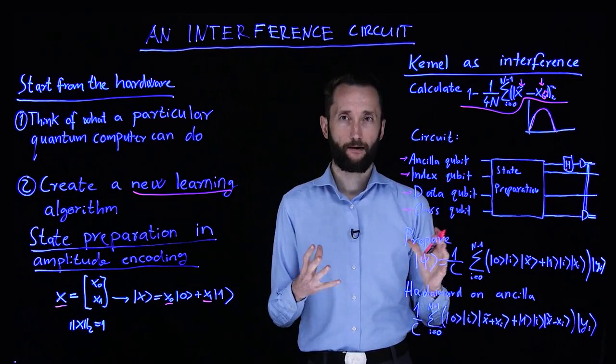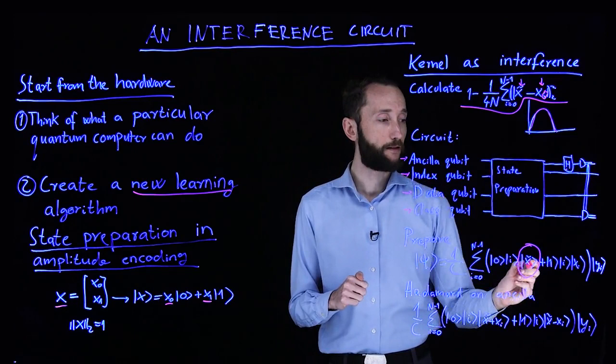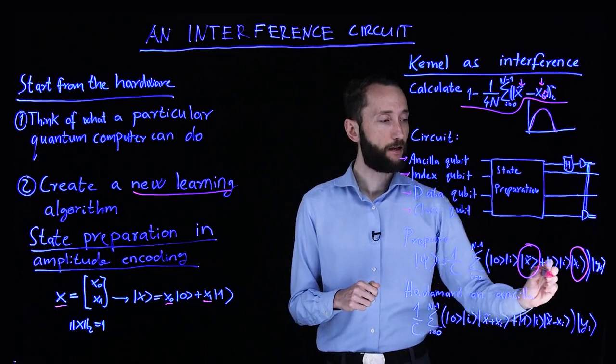And the protocol is very, very simple. First you have to prepare a state. The state looks a bit strange. So this is our amplitude encoded test instance, the one for which we are to calculate the kernel. And here we have our amplitude encoded data instances.